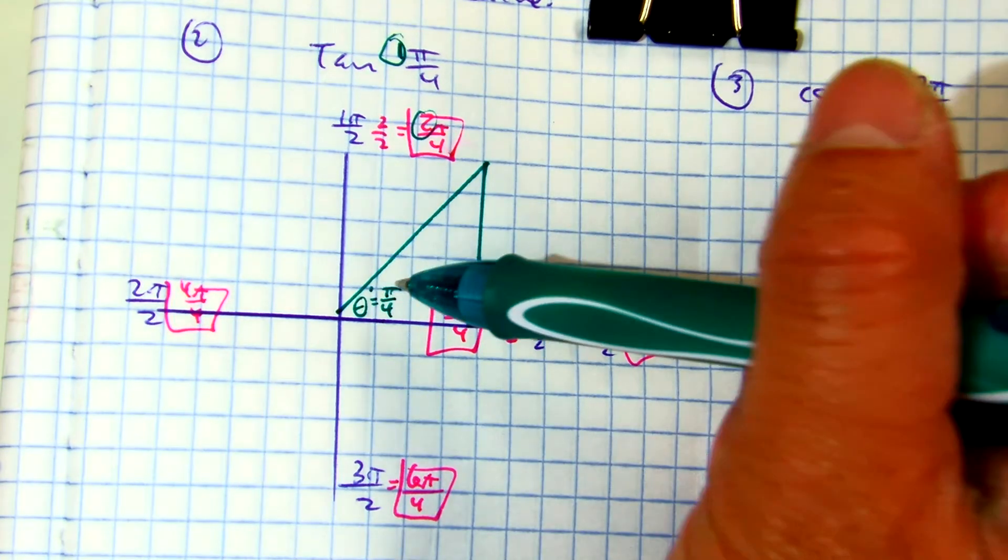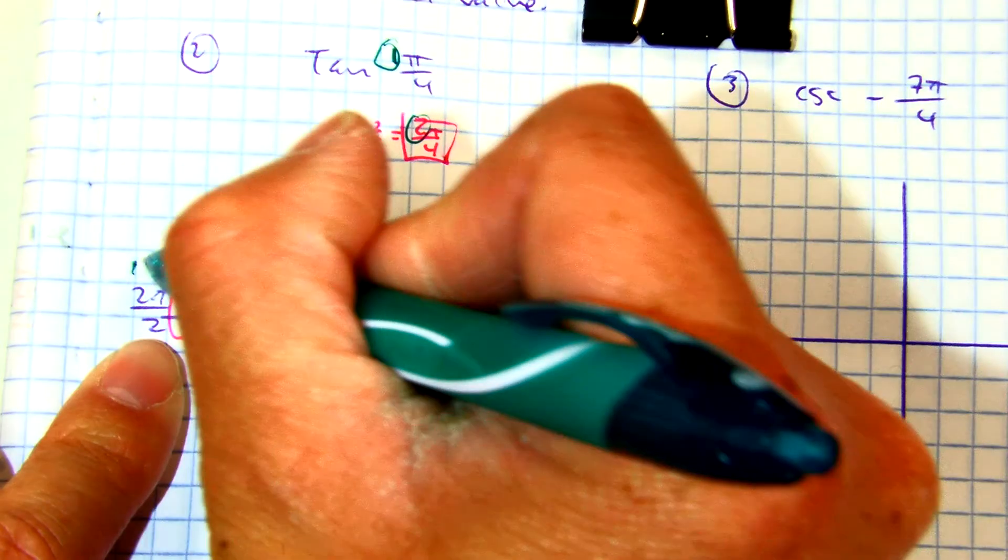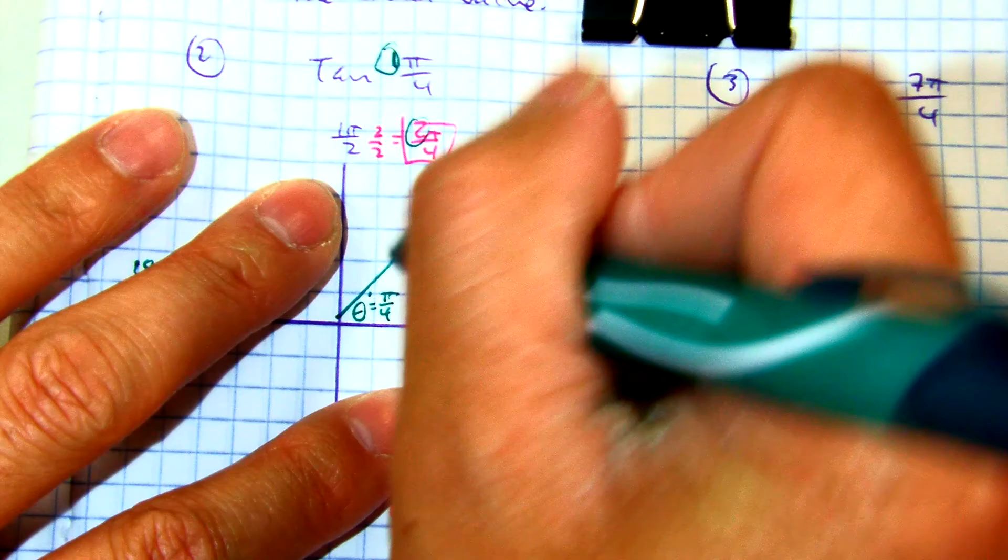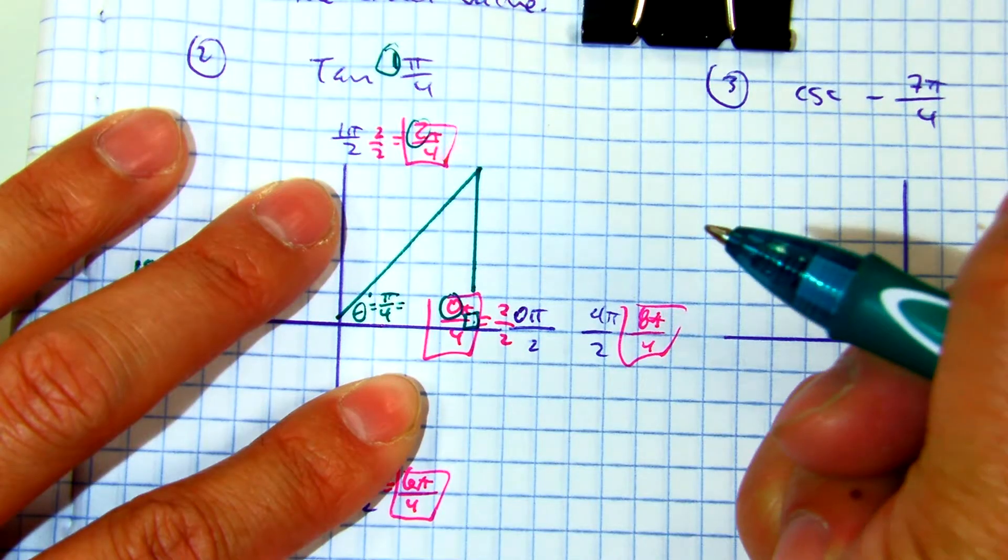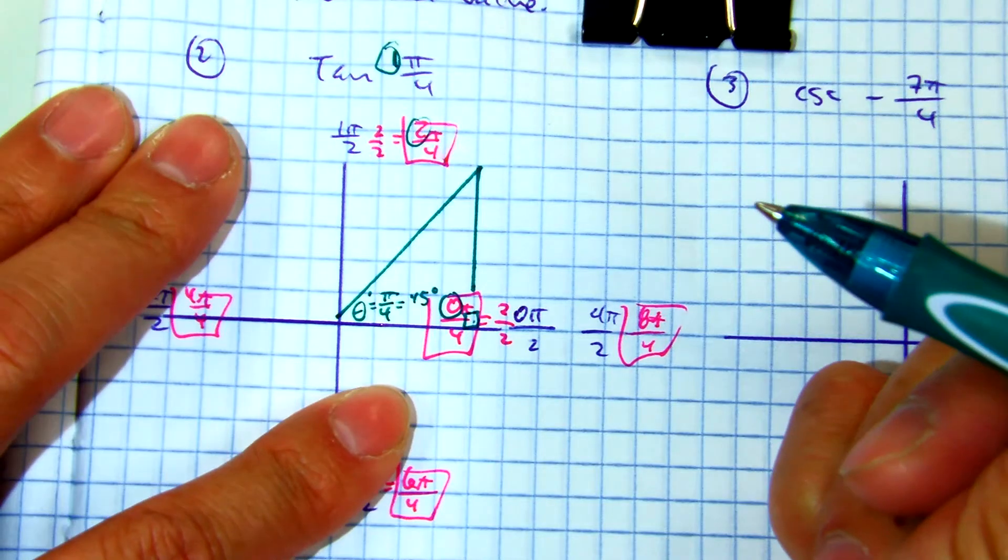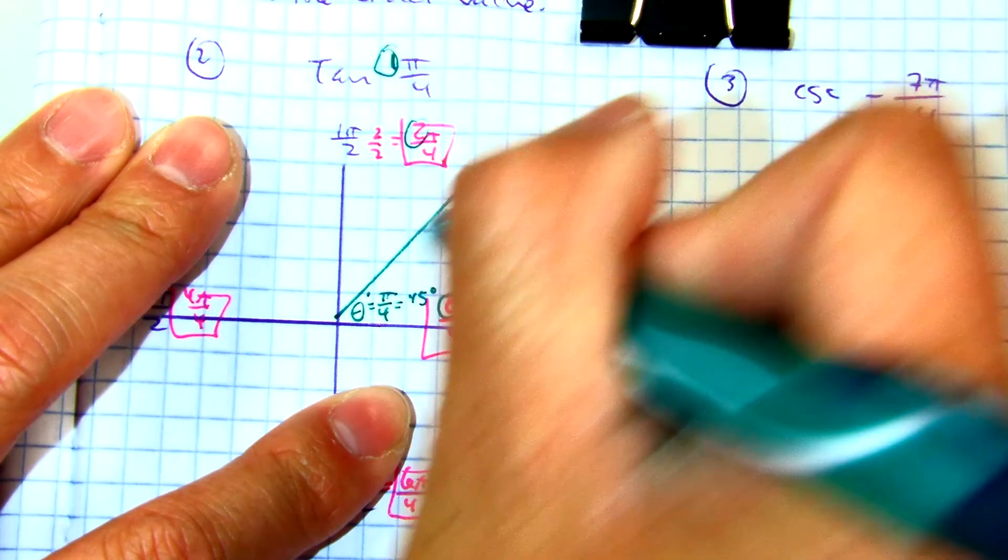Pi is 180 degrees. So 180 divided by 4 is 45 degrees. This is a 45, 45, 90.